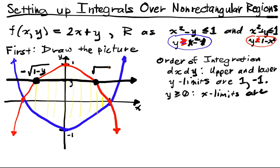I'm going to get negative square root of 1 minus y. And over here, I'm going to get the positive value, 1 minus y. So I go from negative square root 1 minus y as the lower to square root 1 minus y at the upper limit.